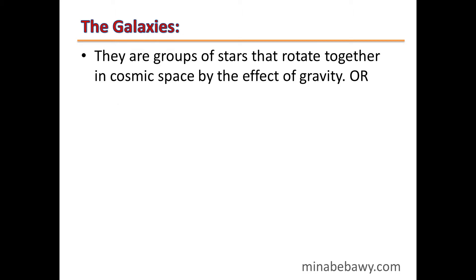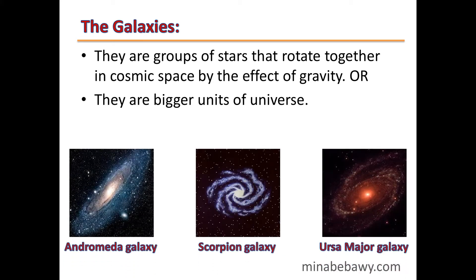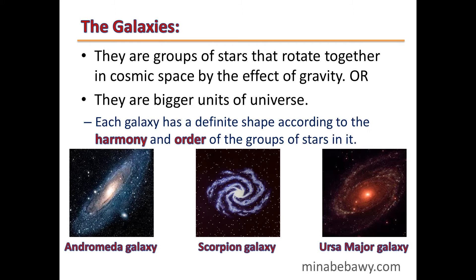Galaxies are groups of stars that rotate together in cosmic space by the effect of gravity. Another definition: galaxies are bigger units of the universe. Each galaxy has a definite shape according to the harmony and order of the groups of stars in it. For example, Andromeda Galaxy, Scorpion Galaxy, and Ursa Major Galaxy — as you can see, they have different shapes.